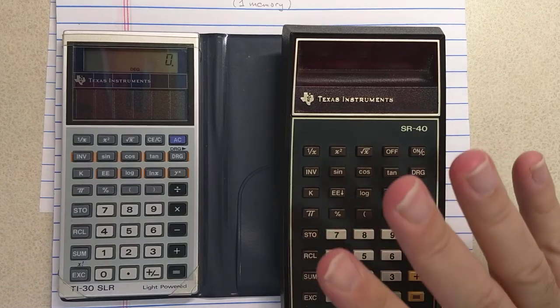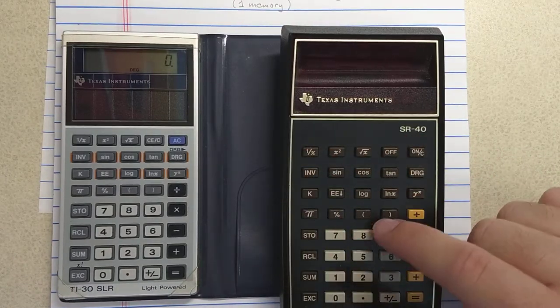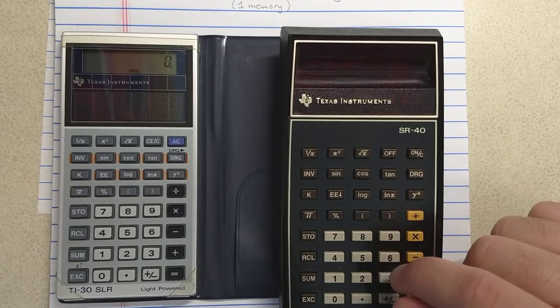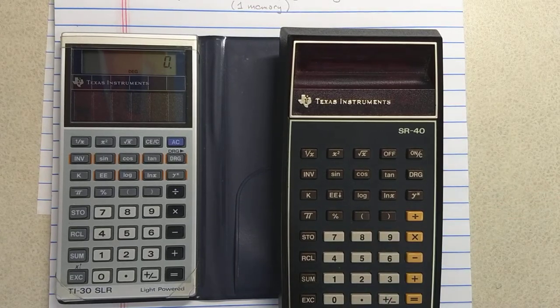Anyway, so the two differences are the battery pack and the keyboard. The functionality, the key layout, everything else is exactly the same between the SR-40 and the original TI-30 introduced in 1976.